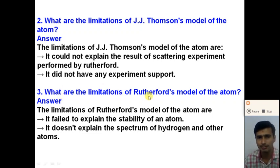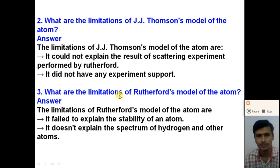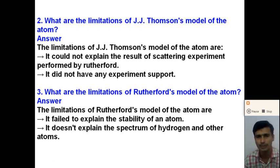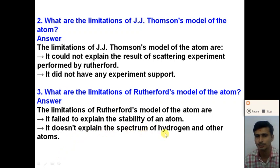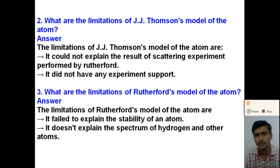Next question: What are the limitations of Rutherford's model of an atom? According to Rutherford's model, all the positive charge and mass is concentrated at a very small region called the nucleus, and the electrons revolve around the nucleus. Rutherford's model failed to explain the distribution of electrons in different orbits, failed to explain the stability of the atom, and does not explain the spectrum of hydrogen and other atoms.